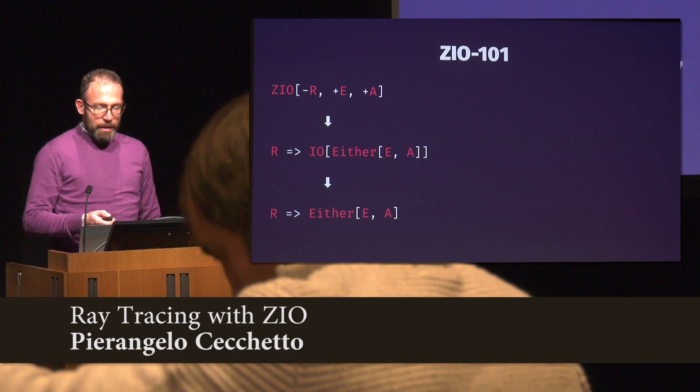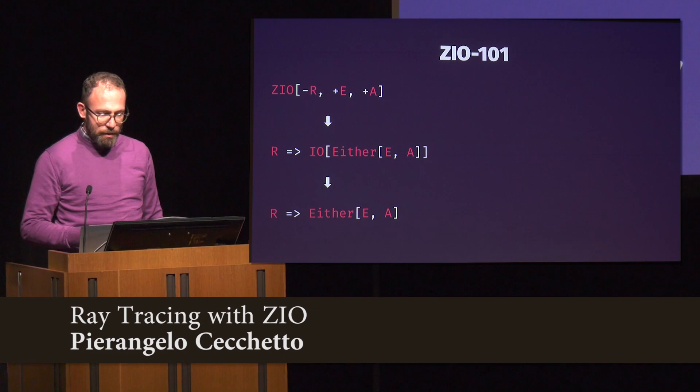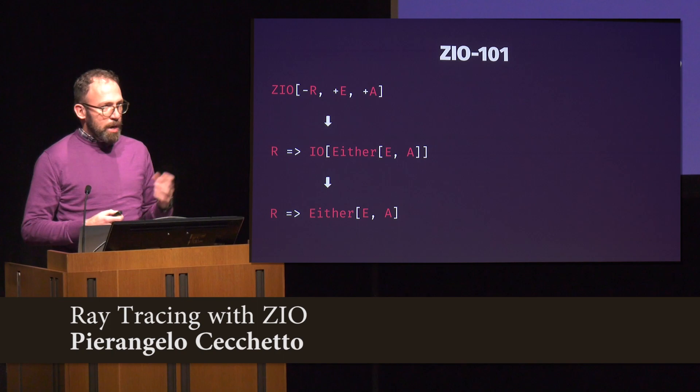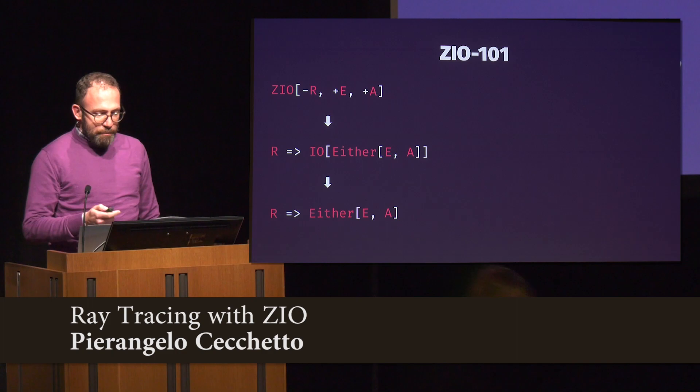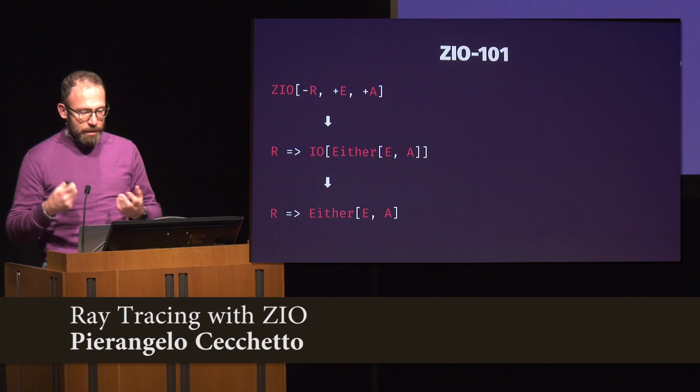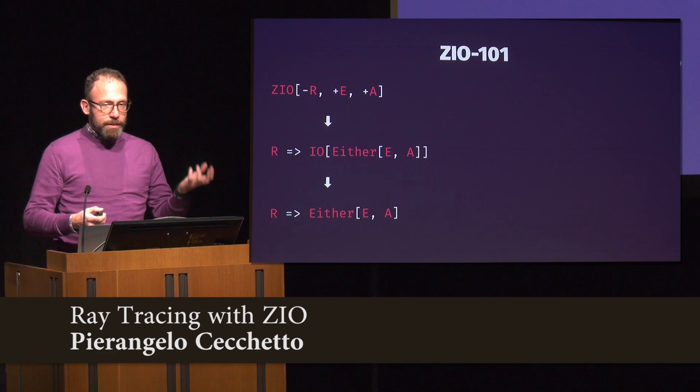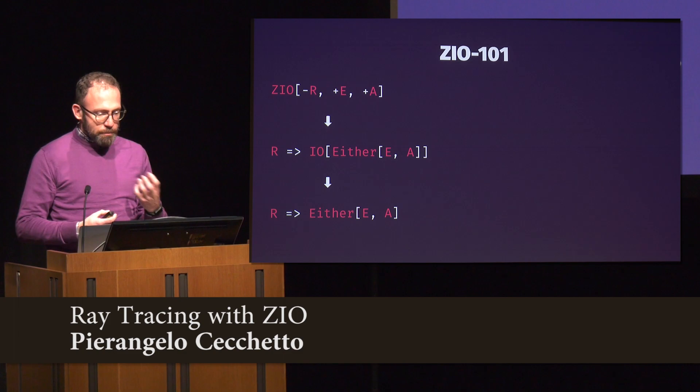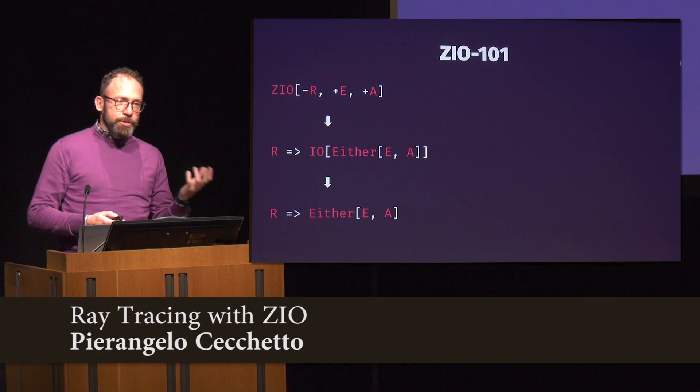ZIO, as you've seen in previous talks, is parameterized on an environment that establishes the requirement for the effect to run, an error channel, and an output channel. You can think of a ZIO of R, E, A as a function from R to either an error E or a value A. To run a ZIO effect I need to satisfy the requirements. When a ZIO effect doesn't require anything specific, R would be Any. But R can be, for example, a configuration case class, a database access module, or a console.